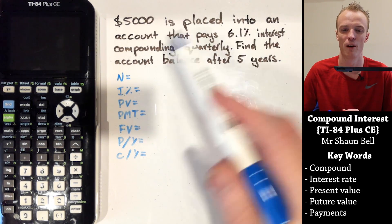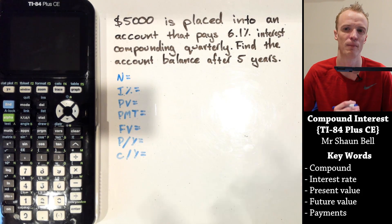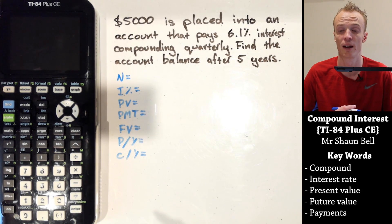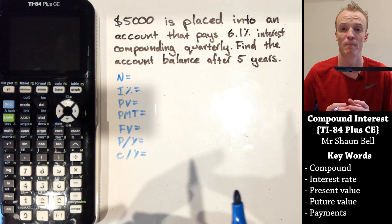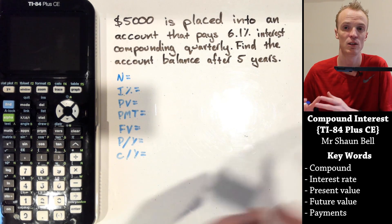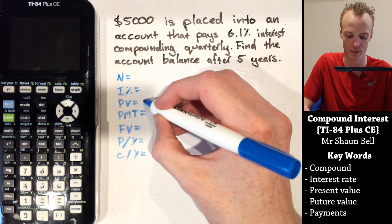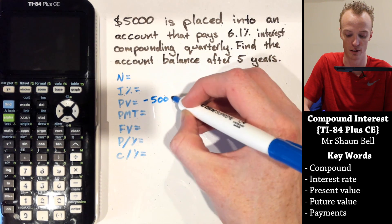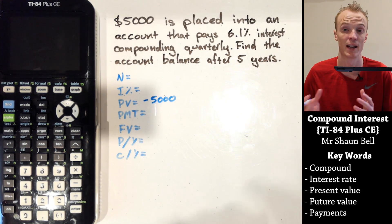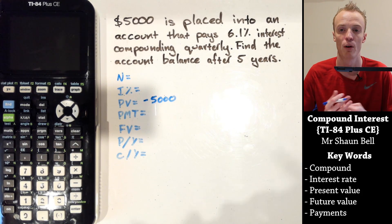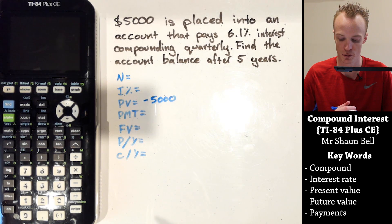When you have this sort of problem, begin by identifying the information you actually have. $5,000 is placed into the account, meaning it's our present value. When putting money into an account, we represent the present value as a negative figure, so this would be negative $5,000. In a loan situation, you'd be taking money from the bank, represented as a positive amount.